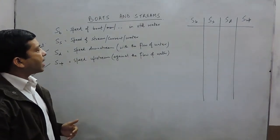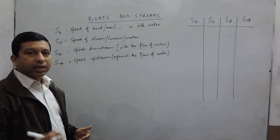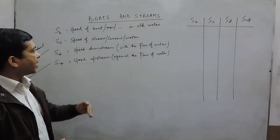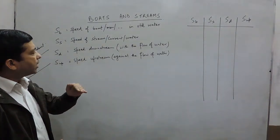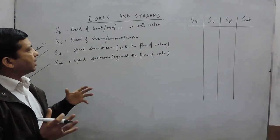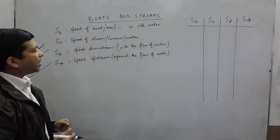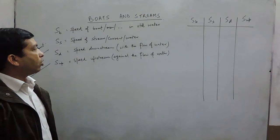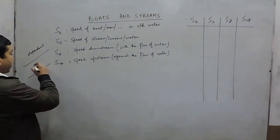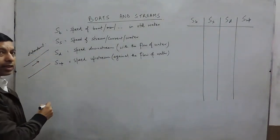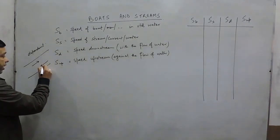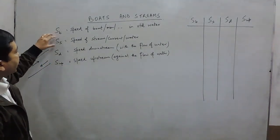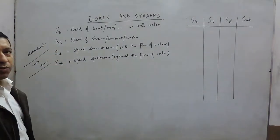At higher altitude, the river flows at a higher rate, so the speed of the boat is high. When it comes to a plain area where the speed of stream is low, the speed of the boat is also low. It also depends on whether the boat is going in the upward direction or the downward direction. So we are discussing four different kinds of speed.